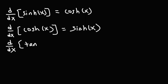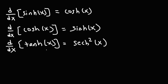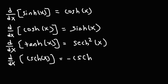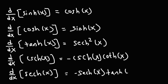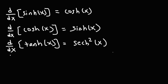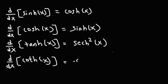The derivative of hyperbolic tangent is hyperbolic secant squared. The derivative of hyperbolic cosecant x is negative hyperbolic cosecant times hyperbolic cotangent of x. The derivative of hyperbolic secant x is negative hyperbolic secant times hyperbolic tangent. And the derivative of hyperbolic cotangent is negative hyperbolic cosecant squared.